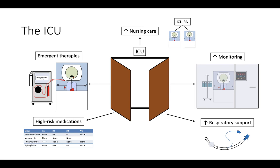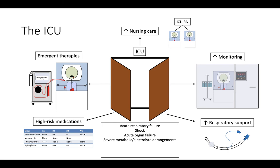If these are the services an ICU can provide, what types of illnesses require ICU-level care? Common illnesses encountered within the ICU include acute respiratory failure, shock, acute organ failure such as renal or liver failure, severe metabolic and electrolyte disturbances like diabetic ketoacidosis, hyperkalemia, and hyponatremia, severe withdrawal or intoxication, neurologic emergencies like brain bleeds or acute strokes, and unstable arrhythmias.